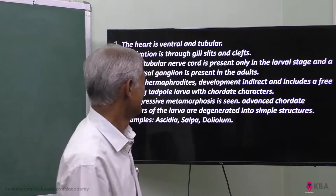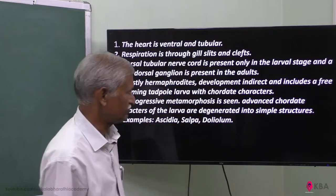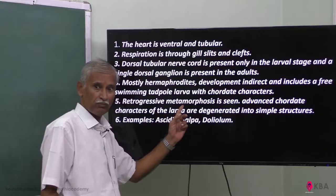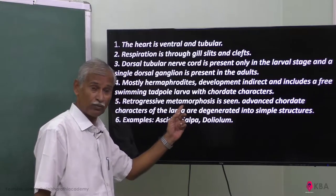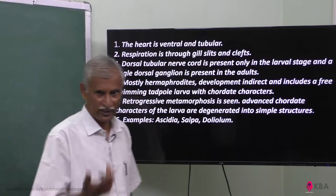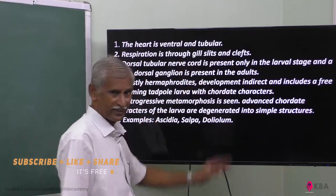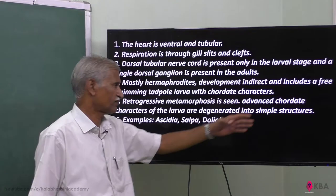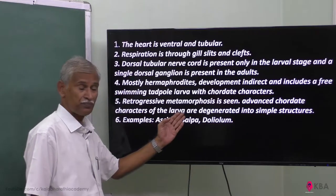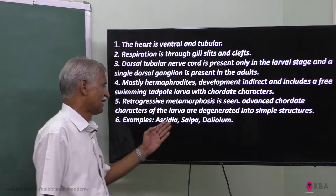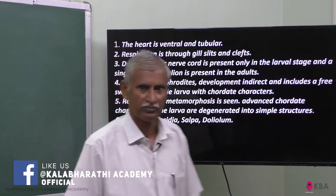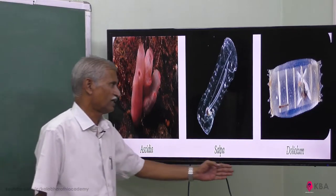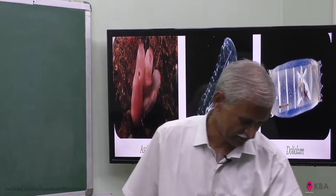In the adult, the notochord and nerve cord are lost. This is called retrogressive metamorphosis — the advanced chordate characters of the larva are degenerated into a simpler structure in the adult. Examples include Ascidia, Salpa, and Doliolum. With this we complete this discussion.